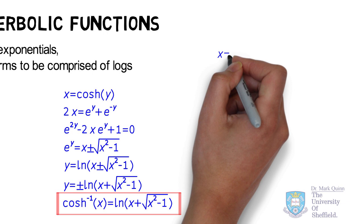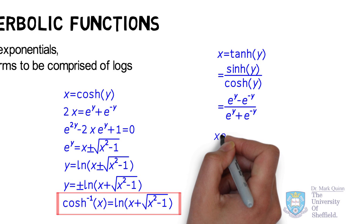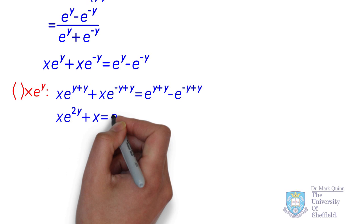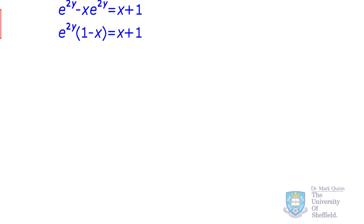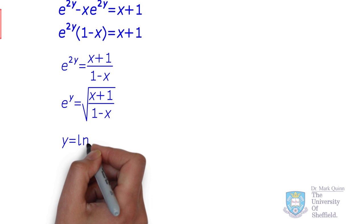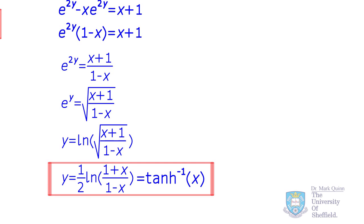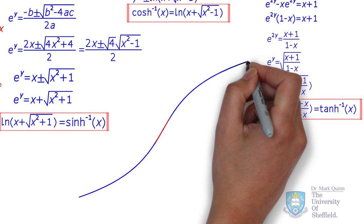Let's continue and derive the inverse hyperbolic tangent. This is defined as the ratio of hyperbolic sine and cosine. Expressing in terms of exponentials to base e, we isolate eʸ by multiplying across, adding powers to get e²ʸ, then taking the square root to obtain the equation in terms of eʸ. Multiplying across by natural log, we determine y as a function of x: inverse hyperbolic tangent equals one-half times ln((1 plus x)/(1 minus x)).